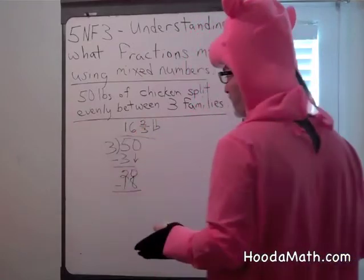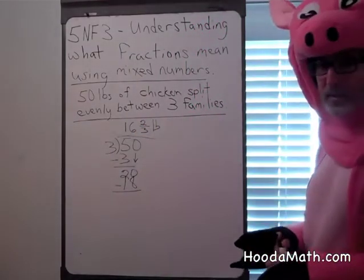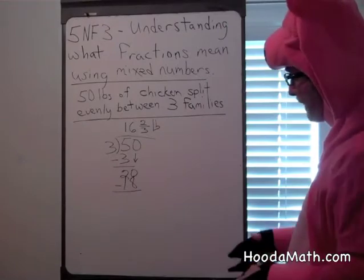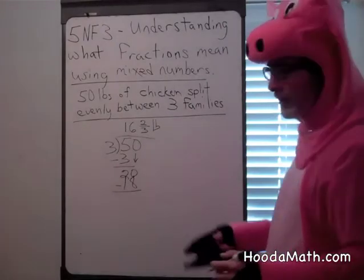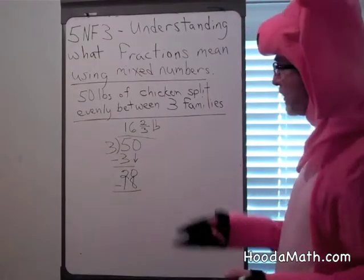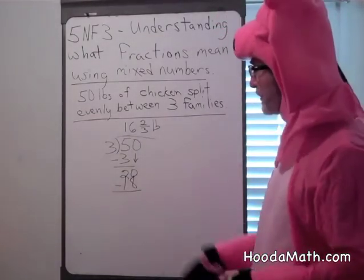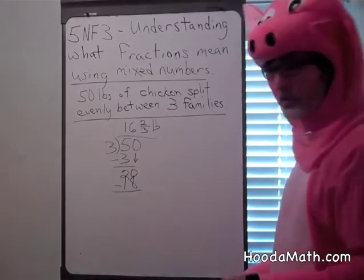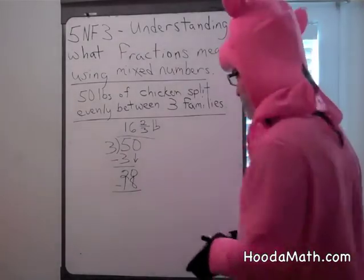So each family will get sixteen and two-thirds of a pound of chicken. Now, how do we know we're right? Well, we can do the reverse or the inverse operation of division, which is multiplication.